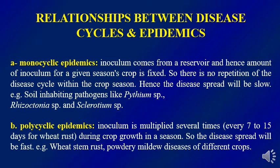We can talk about the relationship between the disease cycle and epidemics. There are two types: monocyclic epidemics and polycyclic epidemics. In monocyclic epidemics, inoculum comes from a reservoir, and the amount of inoculum for a given season is fixed. There is no repetition of the disease cycle within the crop season, so disease spread is slow. Examples include soil diseases caused by Rhizoctonia, Pythium, and Sclerotium.